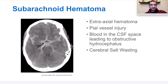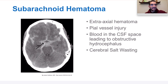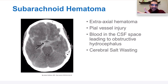Aneurysms around the circle of Willis form berry aneurysms, which are associated with polycystic kidney disease. Unlike traumatic subarachnoid hemorrhages, aneurysmal subarachnoid hemorrhages are associated with cerebral vasospasm — where the vasculature in the brain vasoconstricts, causing ischemia. Nobody really knows why it happens, but it can occur anywhere between zero and 21 days, classically starting around days five through seven. You treat it with nimodipine, a calcium channel blocker, for about 21 days.